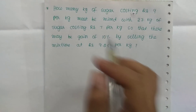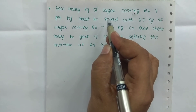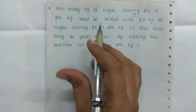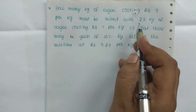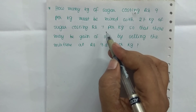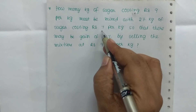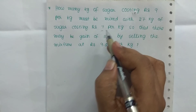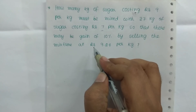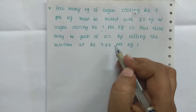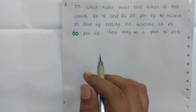OK, so: how many kgs of sugar costing Rs. 9 per kg must be mixed with 27 kgs of sugar costing Rs. 7 per kg?